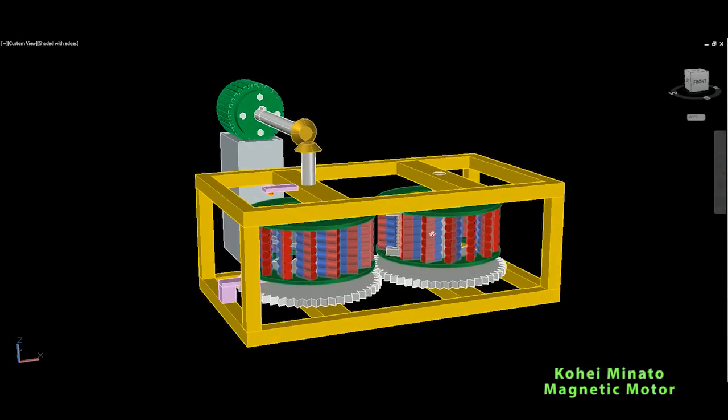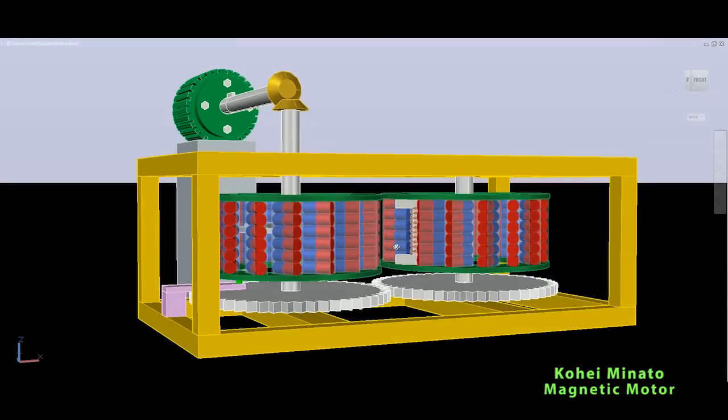As you can see, if I zoom in a little bit, there are some kind of cassettes which consist of a set of magnets, actually six magnets in this case.